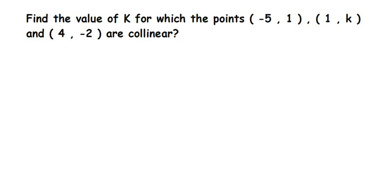Hello everyone, here is a question asked by Asha: find the value of k for which the points (-5, 1), (1, k) and (4, -2) are collinear.